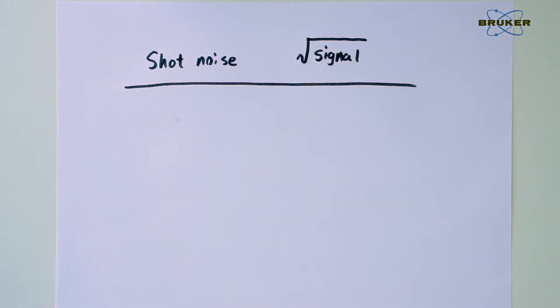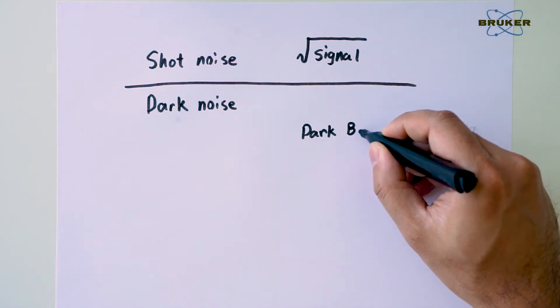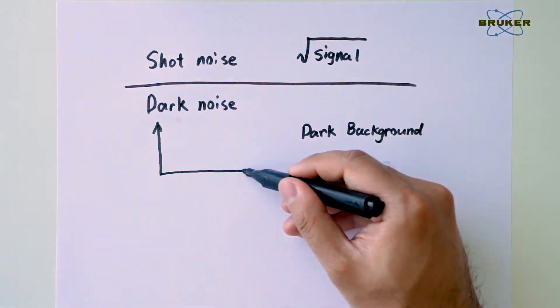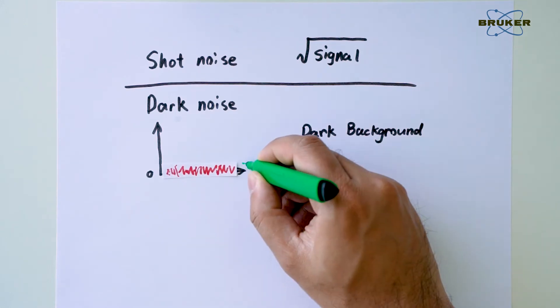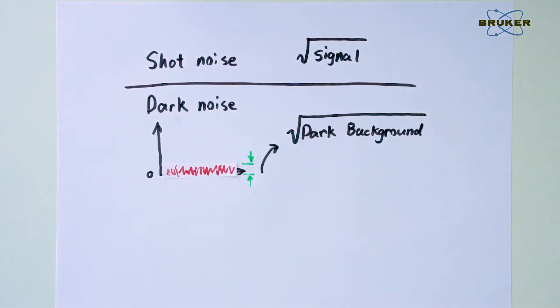When there is no light, the signal level of CCD is still not zero. This is called dark background. It follows the same rule and leads to a noise of square root of the background level. Although we can correct the offset, the dark noise will stay in the measurement.